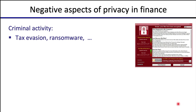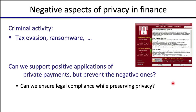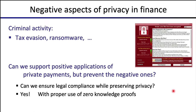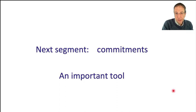Before ending this segment, privacy is not all good — there are negative aspects as well. Privacy could be used for tax evasion or ransomware, like WannaCry, which asked victims to pay a ransom in Bitcoin to hide the author's identity. The real question is: can we support positive applications — private salary payments, supply chain privacy, private charity — while preventing negative ones? Can we ensure legal compliance while preserving privacy for compliant users? The answer is yes, using proper use of zero-knowledge proofs, as we'll see. In the next segment, we'll talk about commitments.